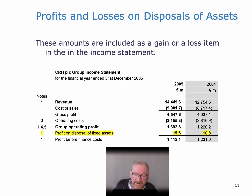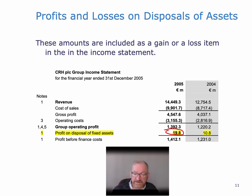You can see this is the CRH Group — a profit on disposal of fixed assets showing up in CRH's income statement from many moons ago, which is a similar item.